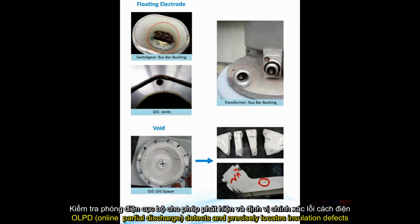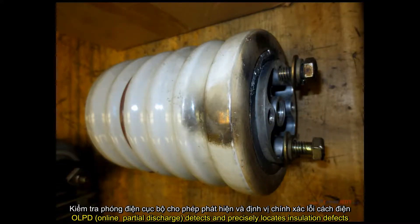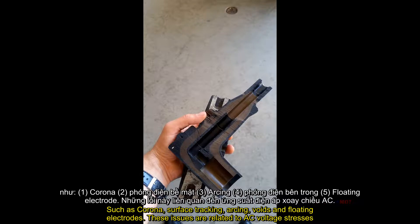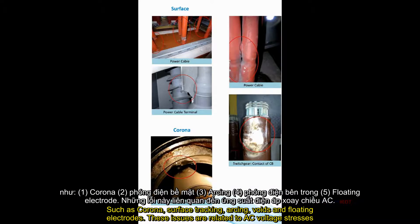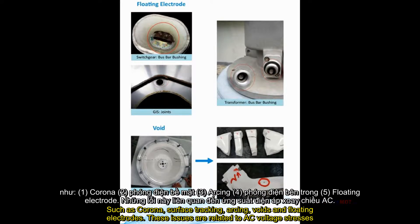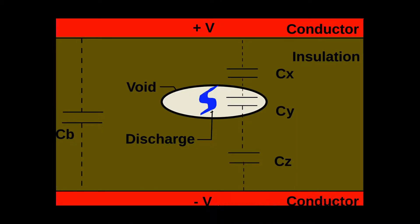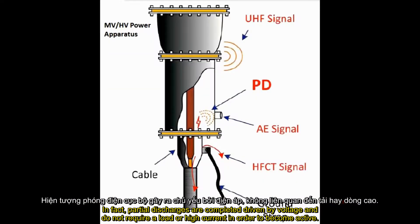OLPD detects and precisely locates insulation defects such as corona, surface tracking, arcing, voids, and floating electrodes. These issues are related to AC voltage stresses. In fact, partial discharges are completely driven by voltage and do not require a load or high current in order to become active.